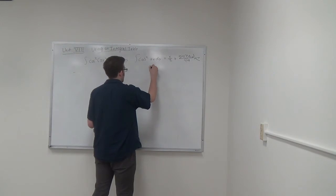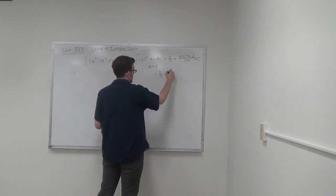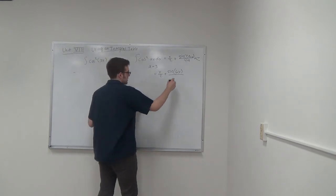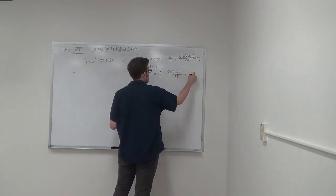So we can say that a is equal to 3, so then we can get x over 2 plus sine 2 times 3 is 6x over 4 times 3 is 12 plus c.